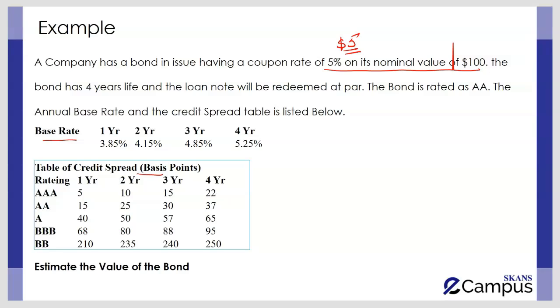To estimate that, our first task is to estimate the cost of debt for each year. Since the credit rating is AA, the cost of debt for year 1 should be the year 1 base rate of 3.85%. Now if we add 0.15%, since 15 basis points means 0.15%, this should give the result of 4%. Similarly for year 2, we add 0.25%, and this means year 2 cost of debt is 4.4%. For year 3 we add 0.3%, 30 basis points, and it will be 5.15%. And finally year 4 credit spread is 37 basis points, which is 0.37%, so if we add 0.37% it will be 5.62%.